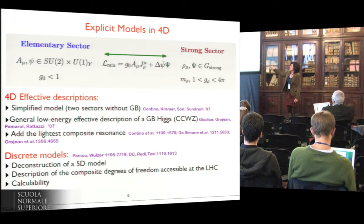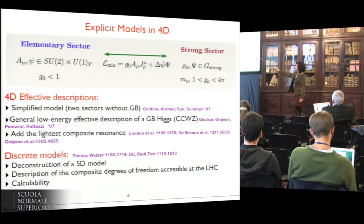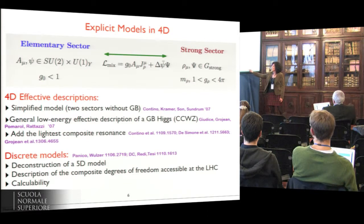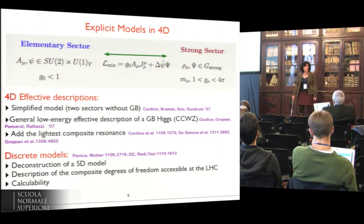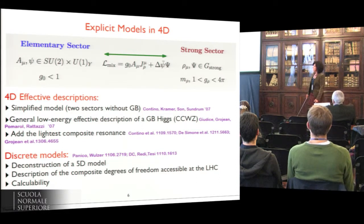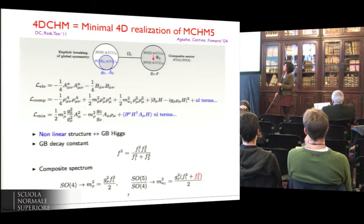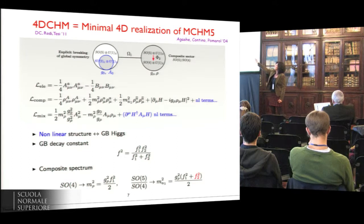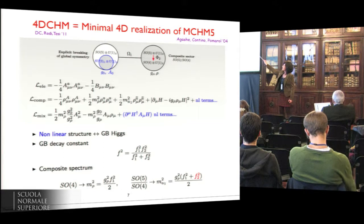There are basically two ways to describe these dynamics. The first is a general low-energy effective description based mainly on the CCWZ formalism, guided by the symmetry properties of the theory. The other approach is via deconstructed models, which are essentially constructions of the five-dimensional model and have the bonus of describing only the composite degrees of freedom accessible at the LHC, plus calculability. I will follow this second way.